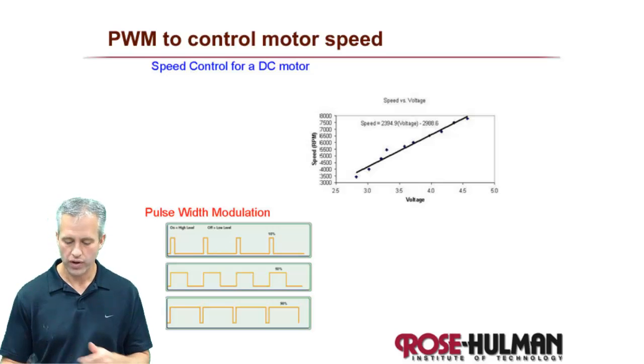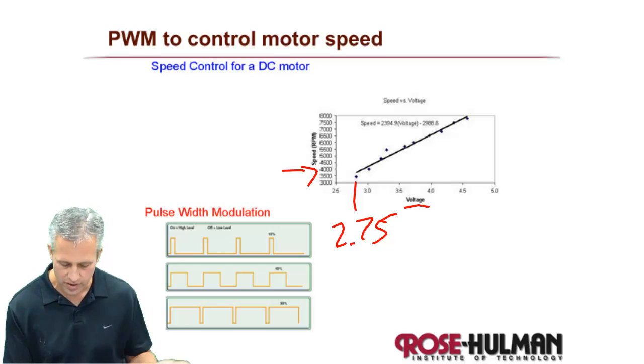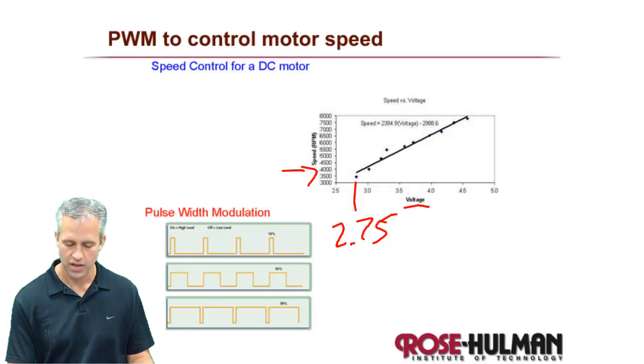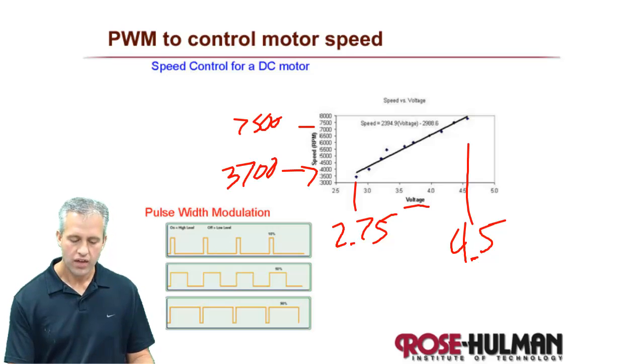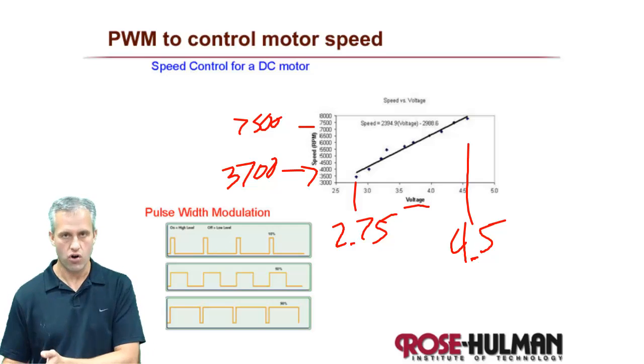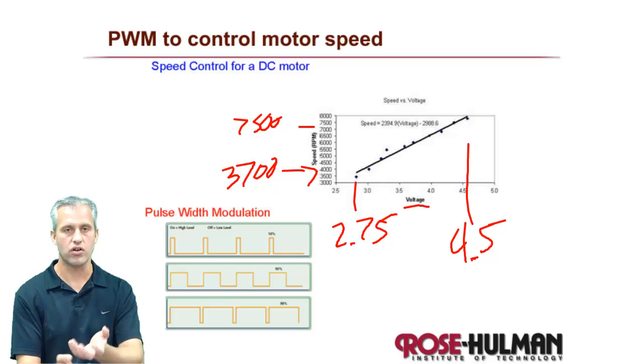So motor control, the way you control the speed of a motor is by changing the voltage that it sees. So here's a little chart. And this motor says that if you're running at 2.75 volts, I'm going to give you a speed of about, I don't know, let's call it 3,700 RPMs. And if you set your voltage up here, say 4.5 volts, then I will give you about 7,500 RPMs. Changing your voltage is hard. There's actually no way on a PIC to do it. You do not send an analog out.